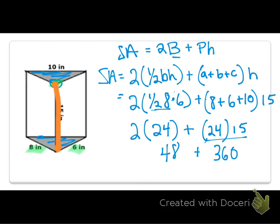So, when I add these together, I have a total surface area of 408 inches squared. That means if I wanted to come and paint this triangular prism, or if I wanted to make a box that was this size, this is how much paint or how much cardboard I would need to cover in total surface area.